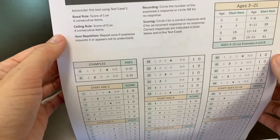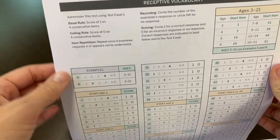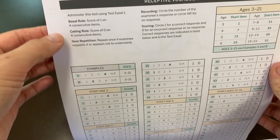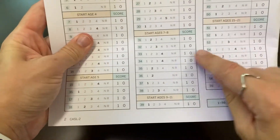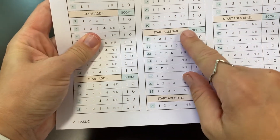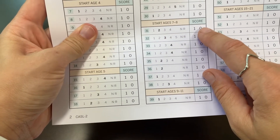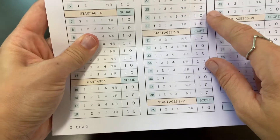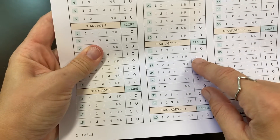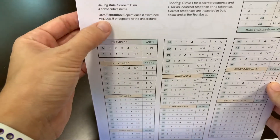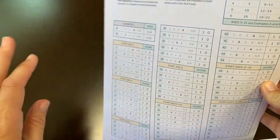Keep in mind that you do have to establish a basal — four consecutive items, meaning the client has to get four in a row correct. So if you're working with a client who is seven to eight years old, you would start at the designated point, but if they get it incorrect, you move backwards until you have four consecutive correct, then jump back down. The ceiling rule for this particular subtest is also four consecutive, so once they get four zeros in a row, you stop that test.